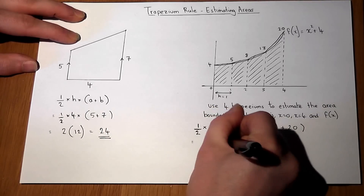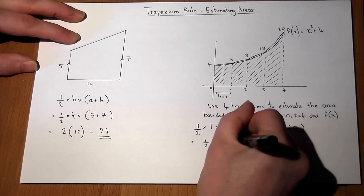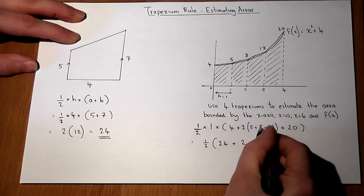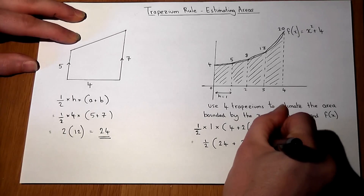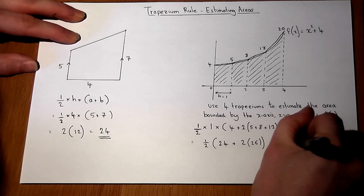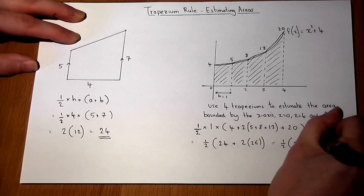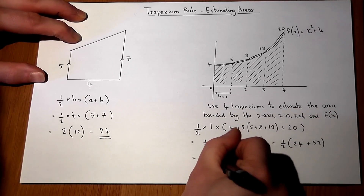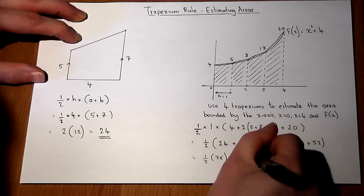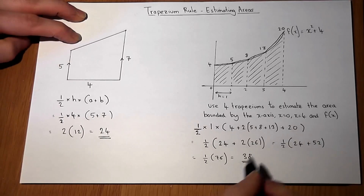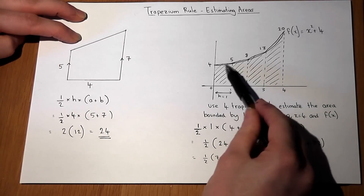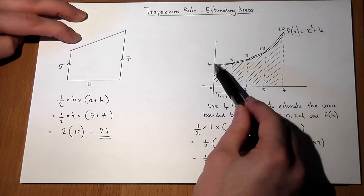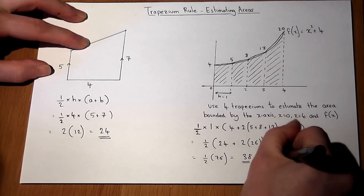So, a half times: 4 plus 20 is 24, plus two lots of 5 plus 8 plus 13, which is 26, giving 52. That's a half of 24 plus 52, which is a half of 76 — so the area equals 38. This is an estimate for the area under the curve. Because we've used trapeziums and the curve is concave, this is an overestimate.